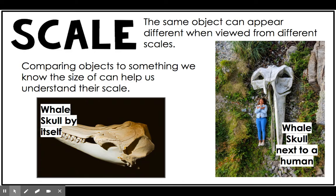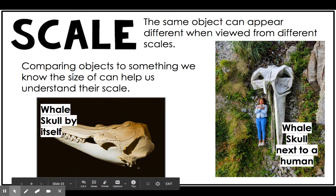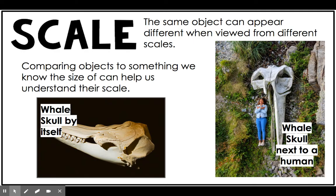The first is scale. Scale means that the same object can be viewed differently, and we can get different perspectives on it when we look from different scales. A really helpful strategy with scale is to compare an object to something that you know the size or scale of, and that can help you understand how big or small it is. A really good example is this whale skull. When you look at it by itself, it doesn't really seem that big. But when you see it next to this human, you can understand how large it is because you have a perspective of the size of a typical human. Using objects that we know from our everyday lives can help us understand the scale of something that we don't interact with frequently.